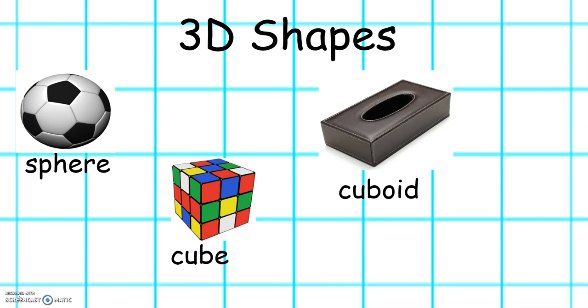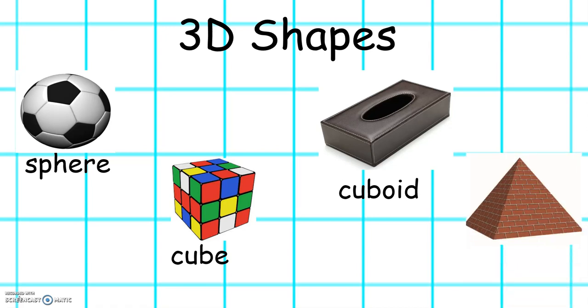This is a cuboid. It is like a long box. And this is a pyramid. It looks like a pyramid.